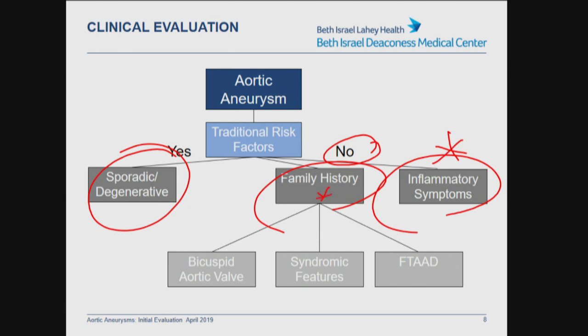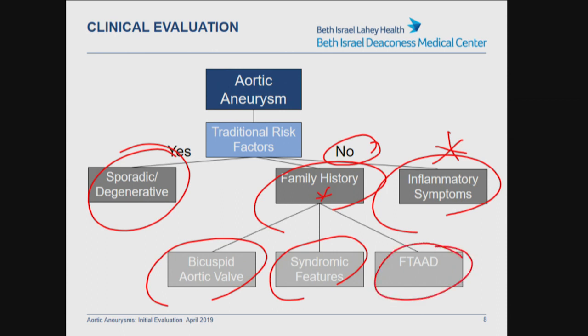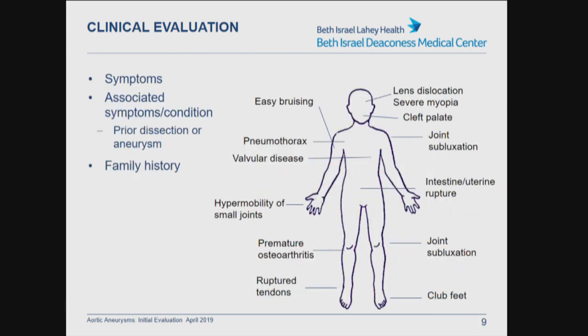If they do have a strong family history, consider whether they have a bicuspid aortic valve, syndromic features of a connective tissue disorder, or otherwise no features of a syndrome but a very strong family history suggesting a genetic mutation driving their presentation. When obtaining the history in clinic, check for symptoms — it's quite rare to have symptoms in the chronic setting of a thoracic aortic aneurysm, but they would include chest or back pain. Rarely, if large enough, they may cause dysphagia, which is usually a strong indication for repair. Other associated conditions include a prior history of an aneurysm or dissection elsewhere in the body and a strong family history.